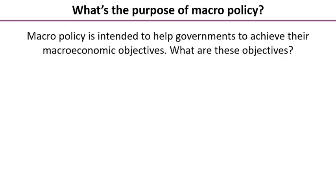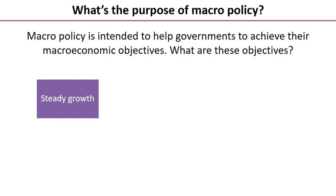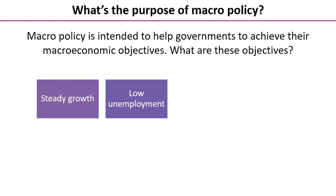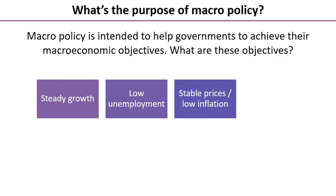Let's take a look at the main macro objectives. The first one is steady economic growth — in other words, an increase in real GDP. Next is low unemployment and stable prices, which we can also express as low inflation. In the UK, we are looking for an inflation rate of around two percent, which is the official target.